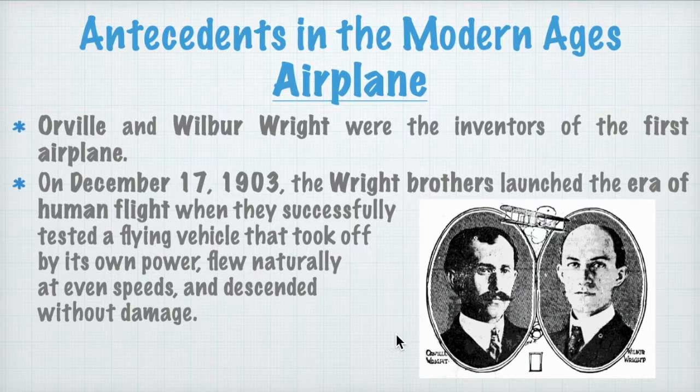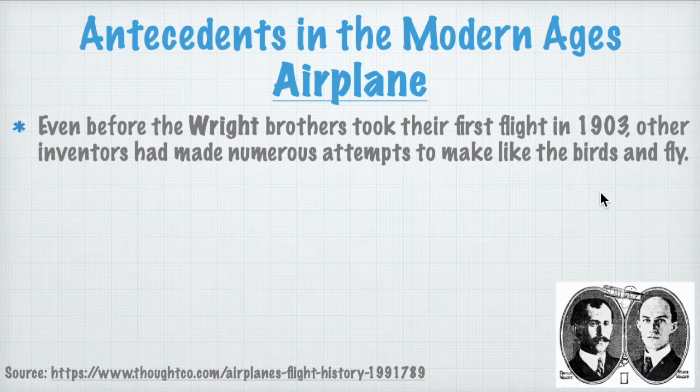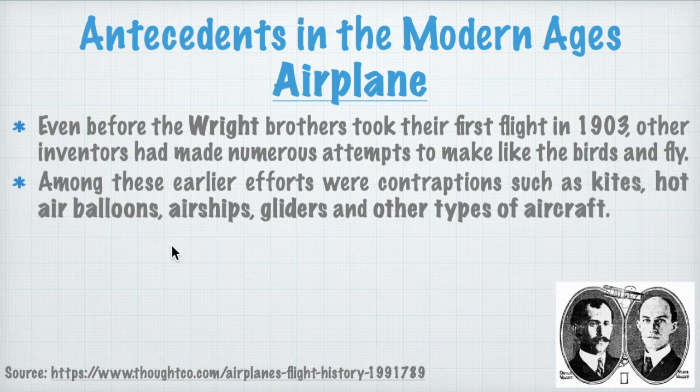This is Orville and this is Wilbur — the famous Wright brothers. Just take note that even before the Wright brothers took their first flight in 1903, there were other inventors who had made numerous attempts to do so. Among these were kites, hot air balloons, airships, zeppelins, gliders, and other types of aircraft.